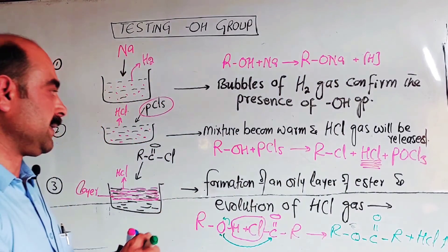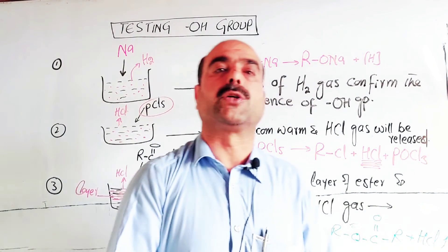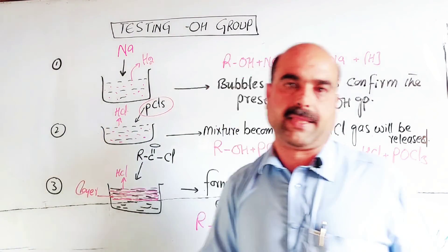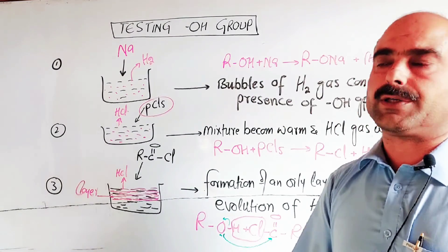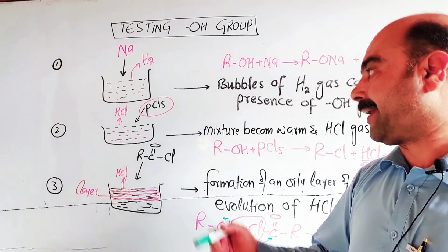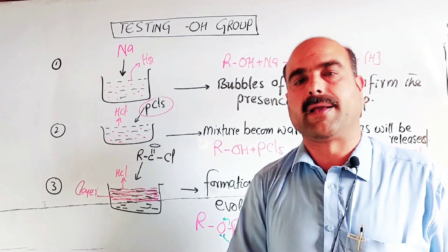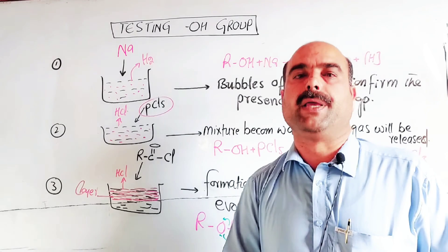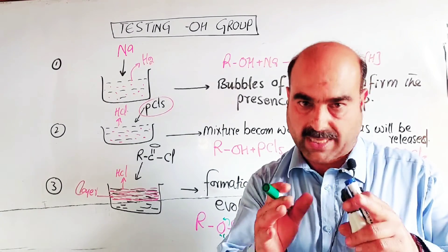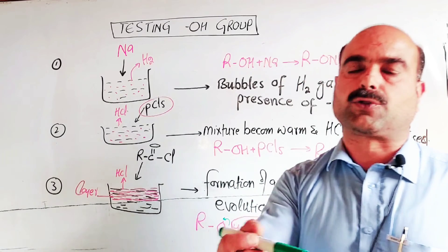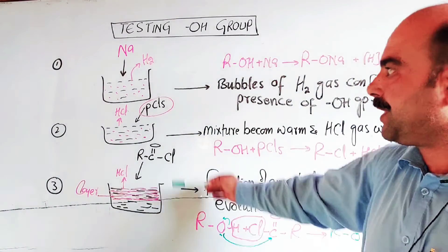When we confirm the presence of the OH group, the given compound is confirmed to be an alcohol. This is both a theoretical and practical topic — it is part of the second-year practical portion on detection of functional groups in organic compounds. The hydroxyl group is tested using three tests.